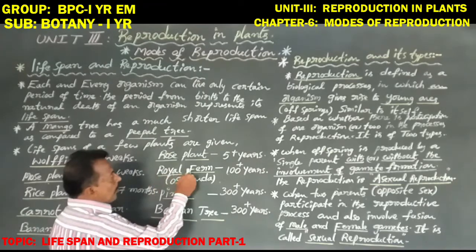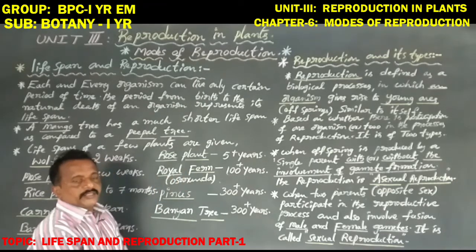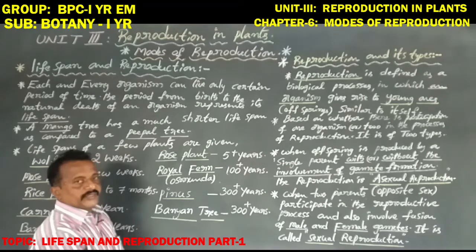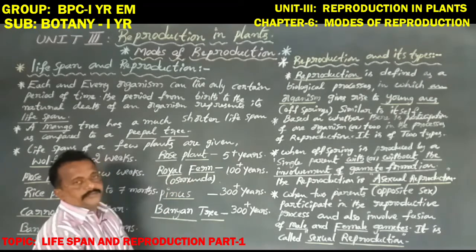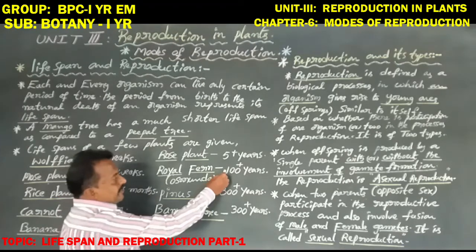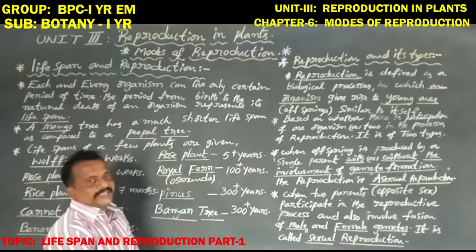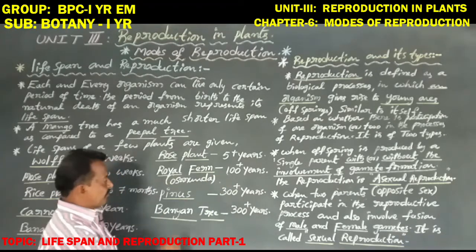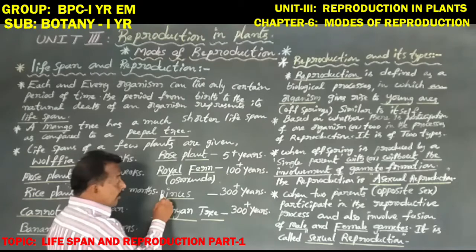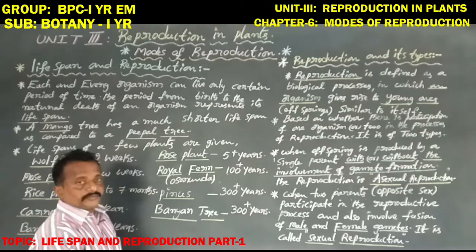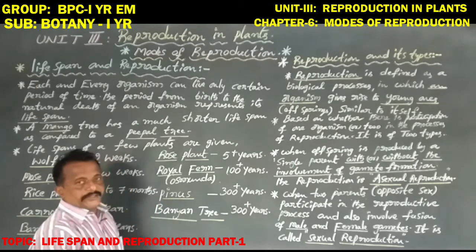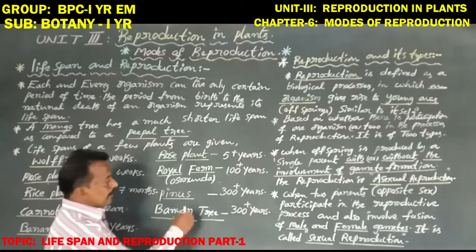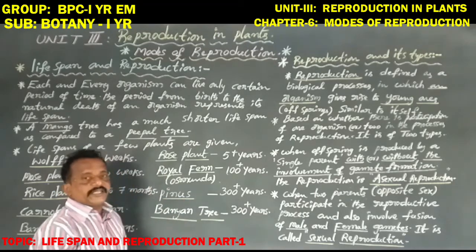Next, coming to the royal palm plant. This is a monocot plant. Its life span is 100 plus years. Next, coming to the fir/pine plant — this is a gymnosperm plant. Its life span is 300 plus years.